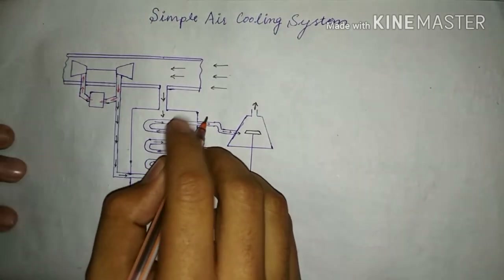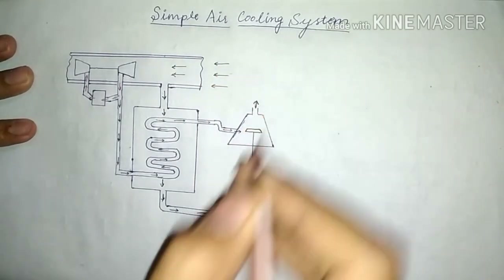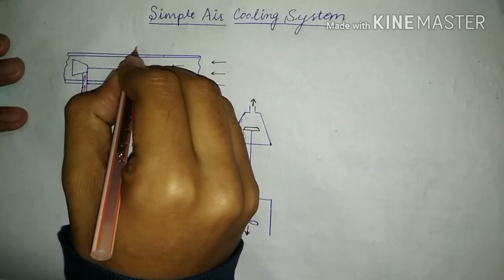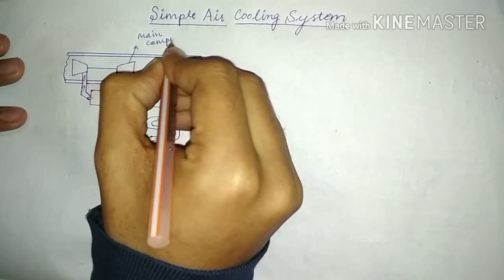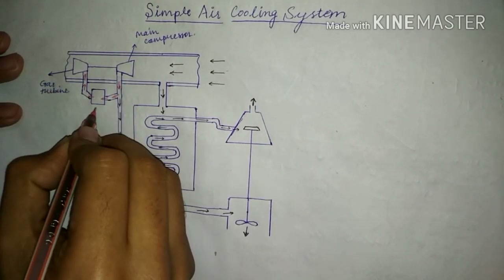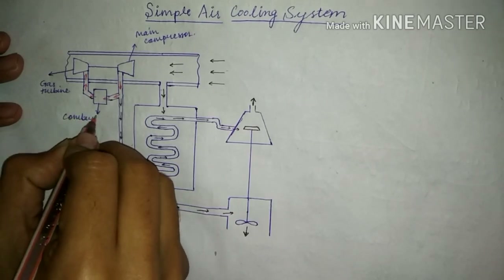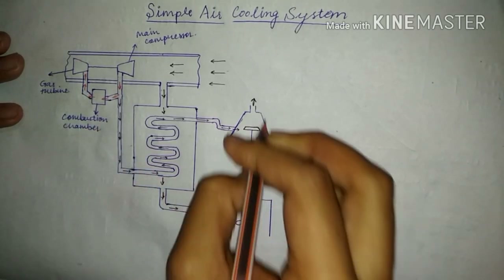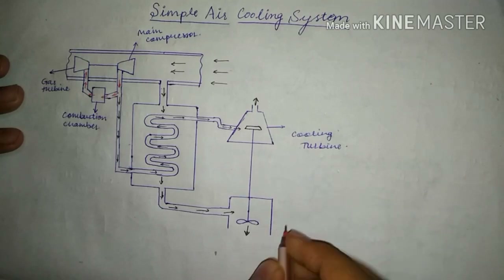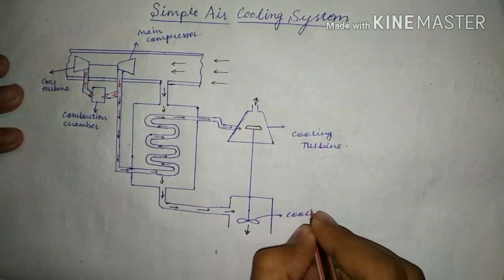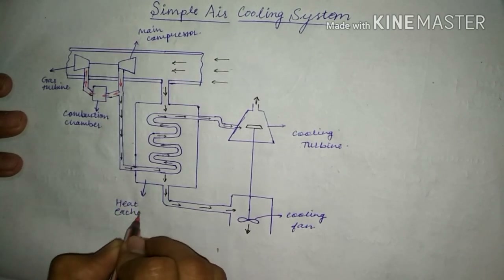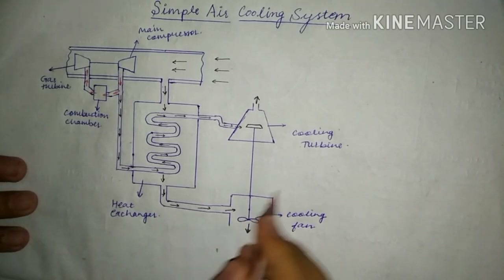Today I am going to explain the simple air cooling system. The main components in this system are: the main compressor, the gas turbine, the combustion chamber, the cooling turbine, the cooling fan, and the heat exchanger.